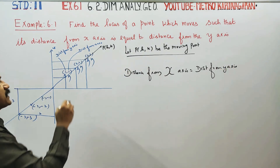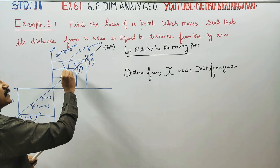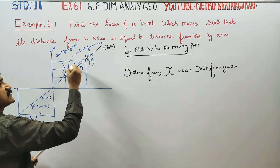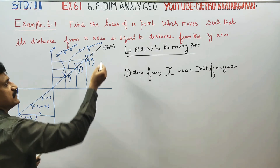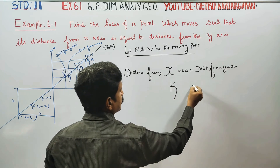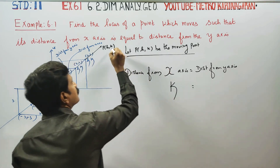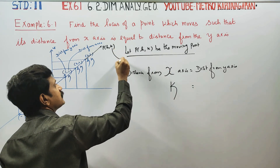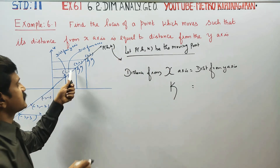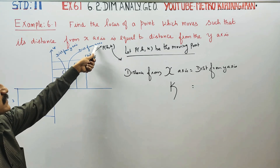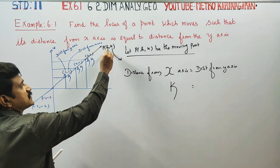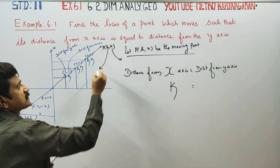Distance from x-axis — the second letter, k — this is the distance from x-axis. The first letter, h — this is the distance from y-axis.